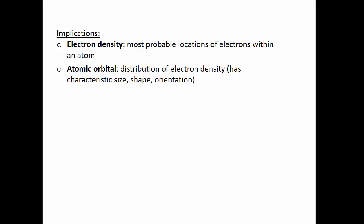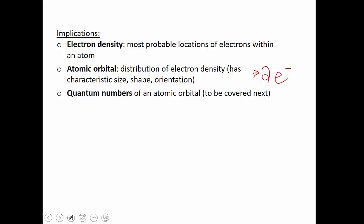Within each atomic orbital, each orbital has the capacity of two electrons — make a note of that. There are different types of atomic orbitals that have different sizes, different shapes, and different orientations. To describe these orbitals and where electrons are within an atom, we use a set of four quantum numbers to define the location of a single electron within a given atom.